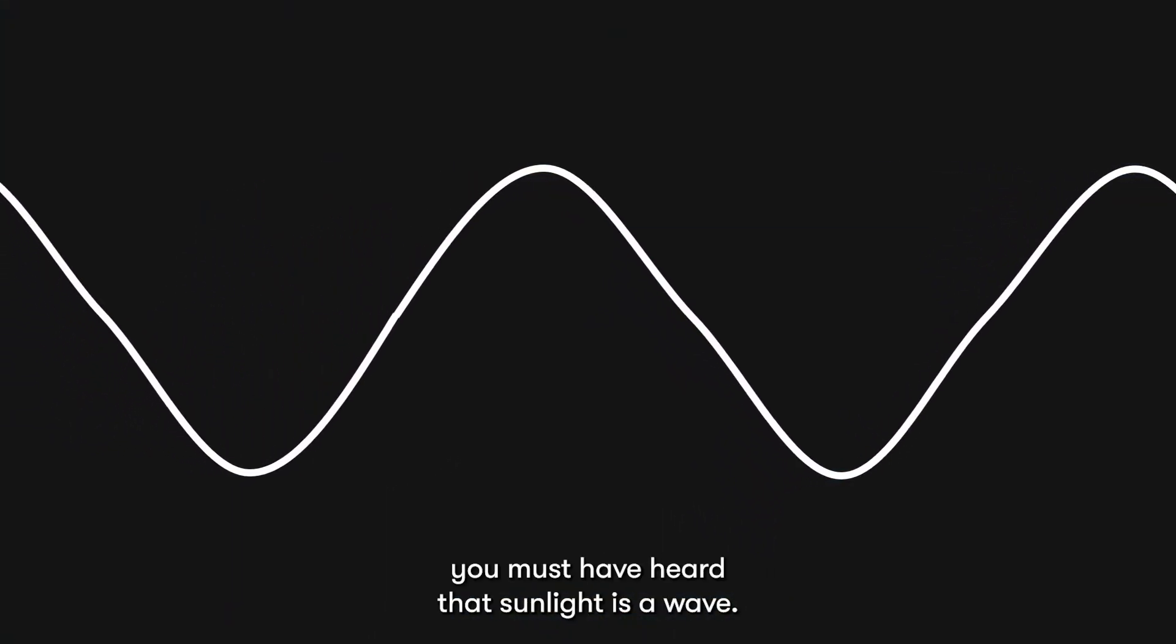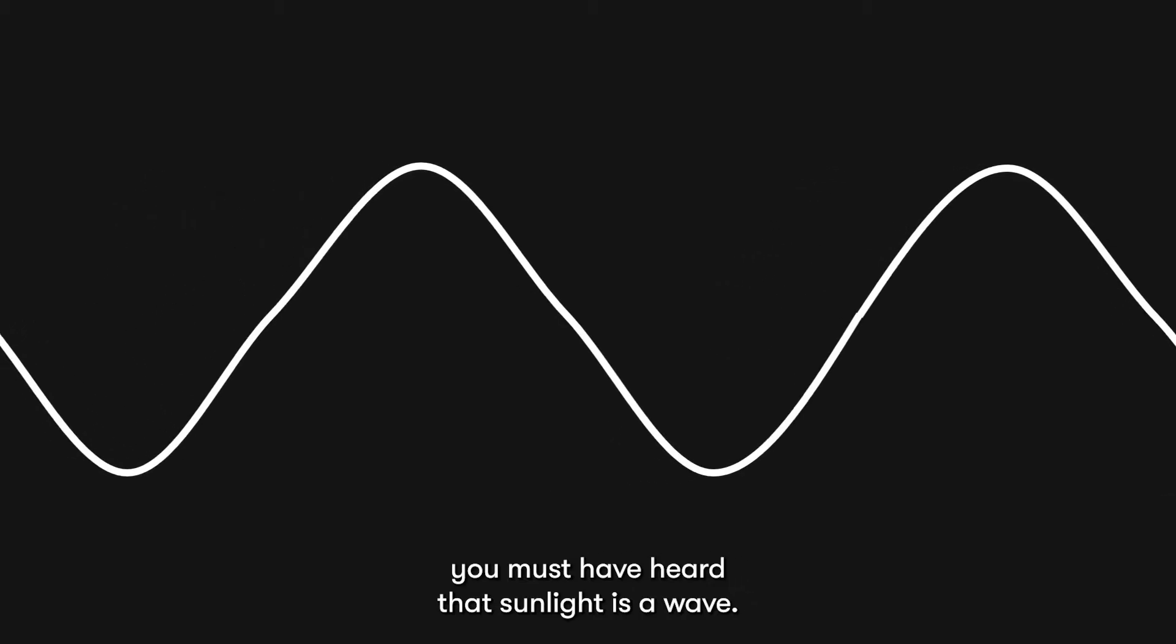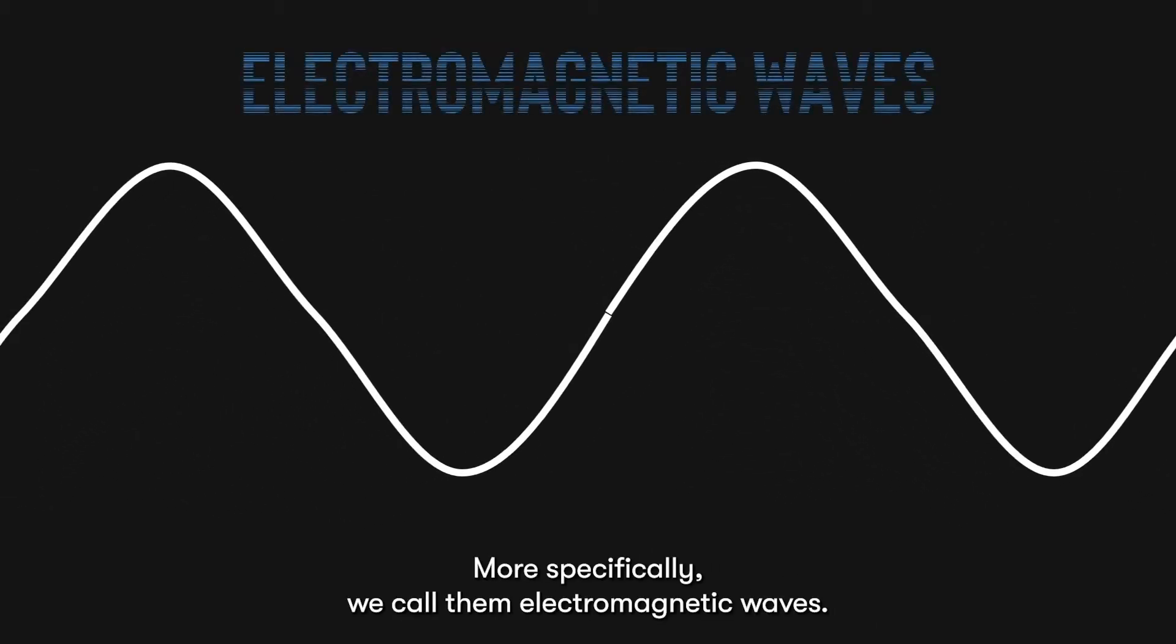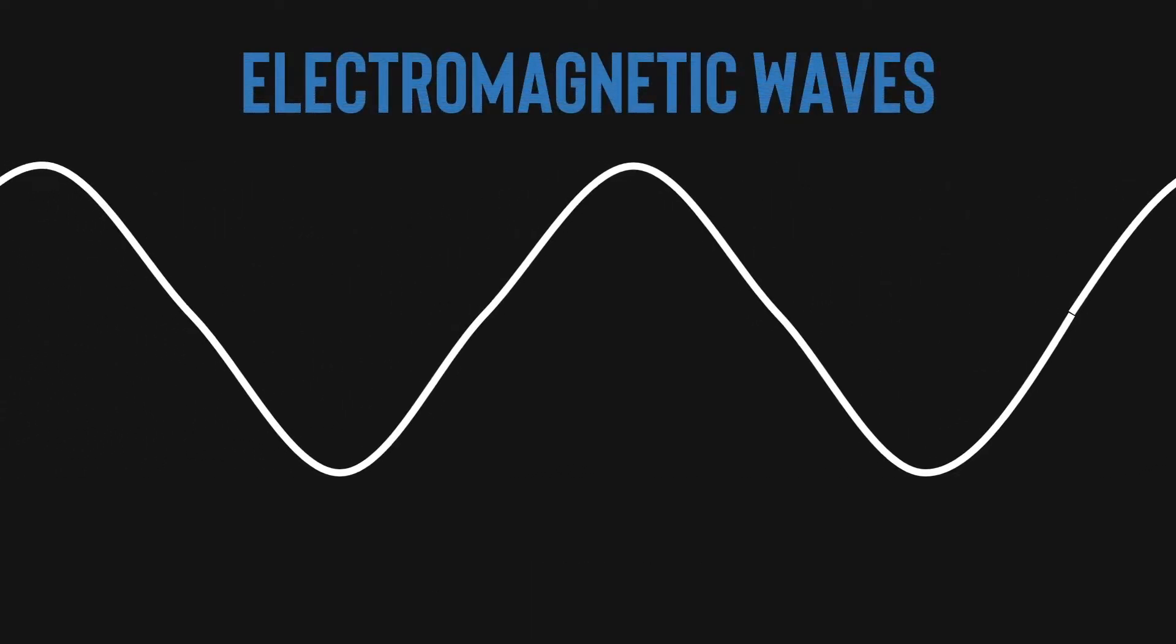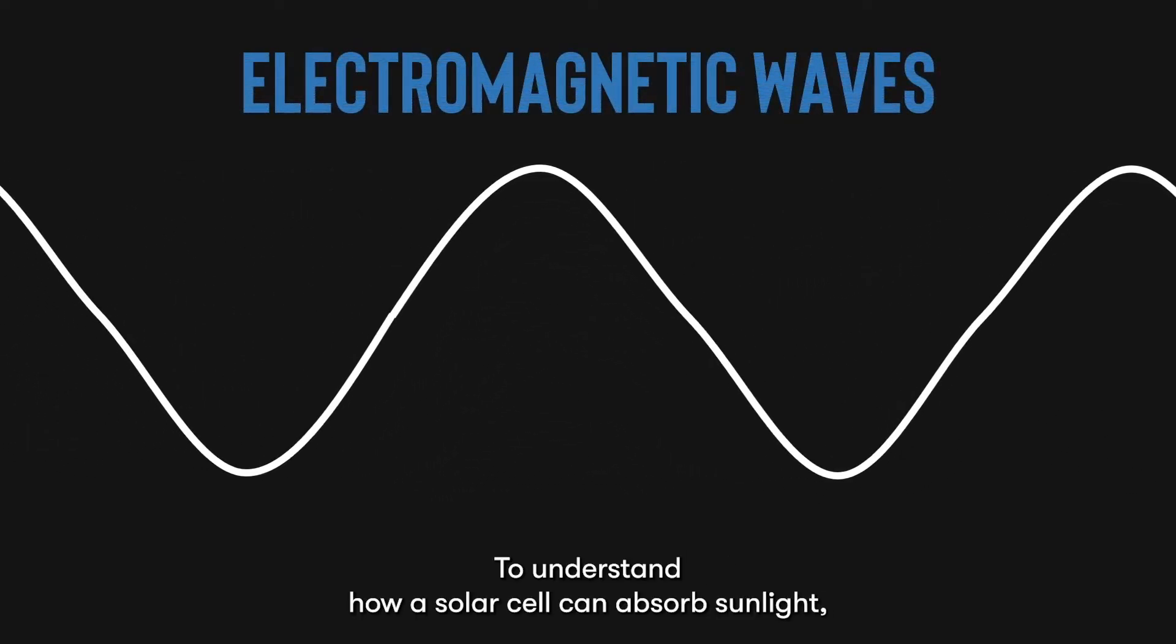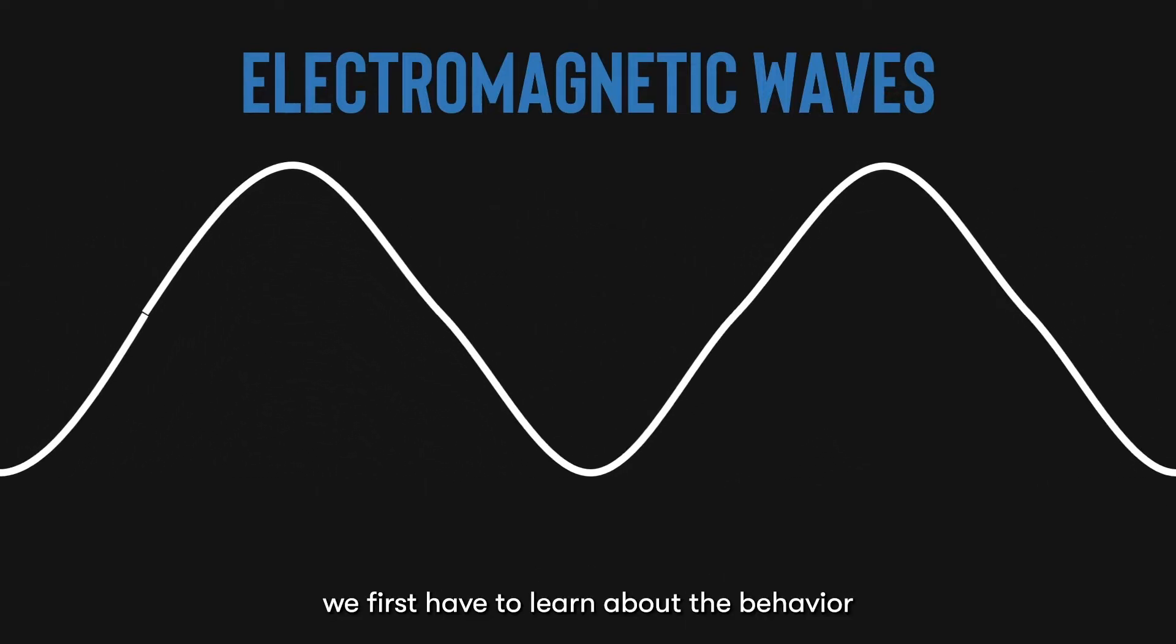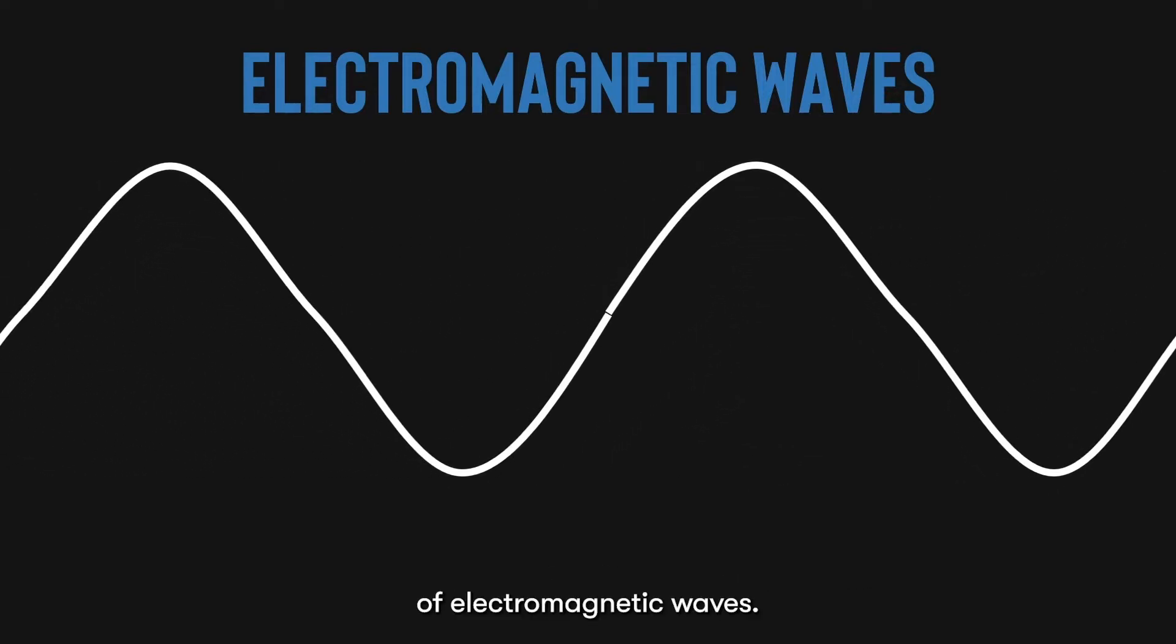I'm pretty sure you must have heard that sunlight is a wave. More specifically, we call them electromagnetic waves. To understand how a solar cell can absorb sunlight, we first have to learn about the behavior of electromagnetic waves.